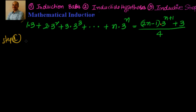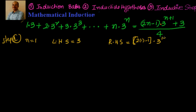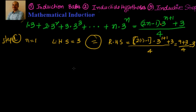To prove for n=1: LHS = 3. On the right-hand side, I have (2·1 − 1)·3^(1+1) + 3, divided by 4. That gives us 1·3² = 9, so (9 + 3)/4 = 12/4 = 3. So LHS equals RHS for n=1.